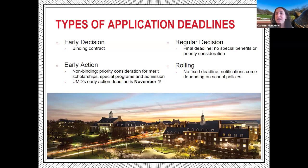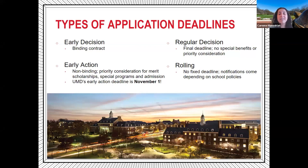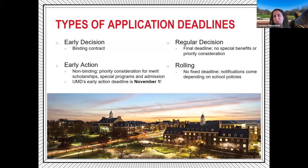The second type is Early Action — typically the very first deadline that a lot of schools offer, but it's a non-binding contract. You can still look at other universities, and if you're accepted, you don't have to go. You can still explore all other schools you're accepted into. Early action often comes with priority consideration for merit scholarships, special programs, and admissions, since you're in the very first pool of applicants being reviewed for the freshman class.